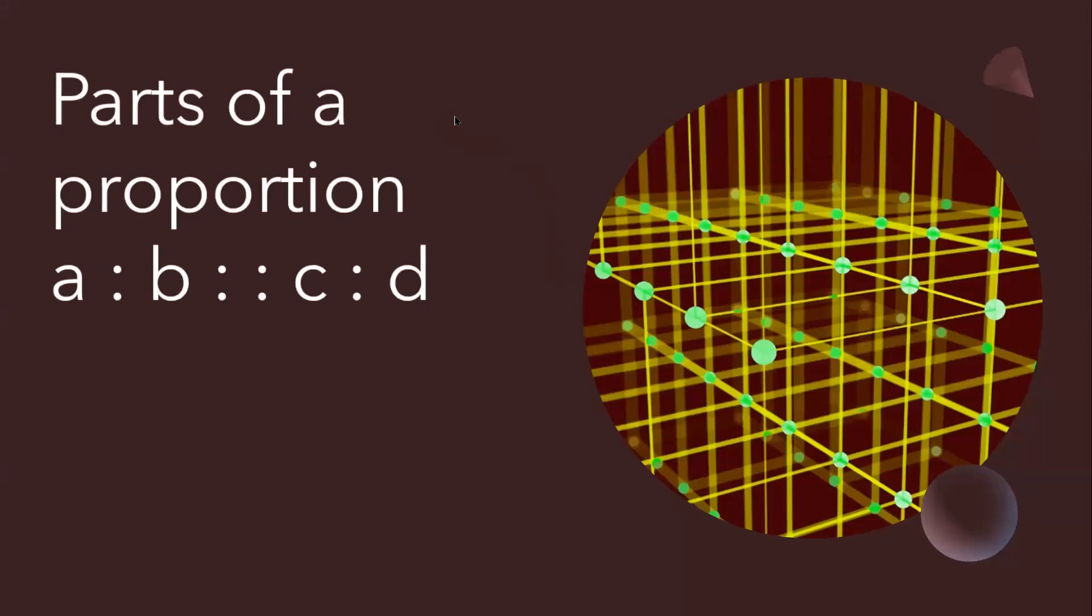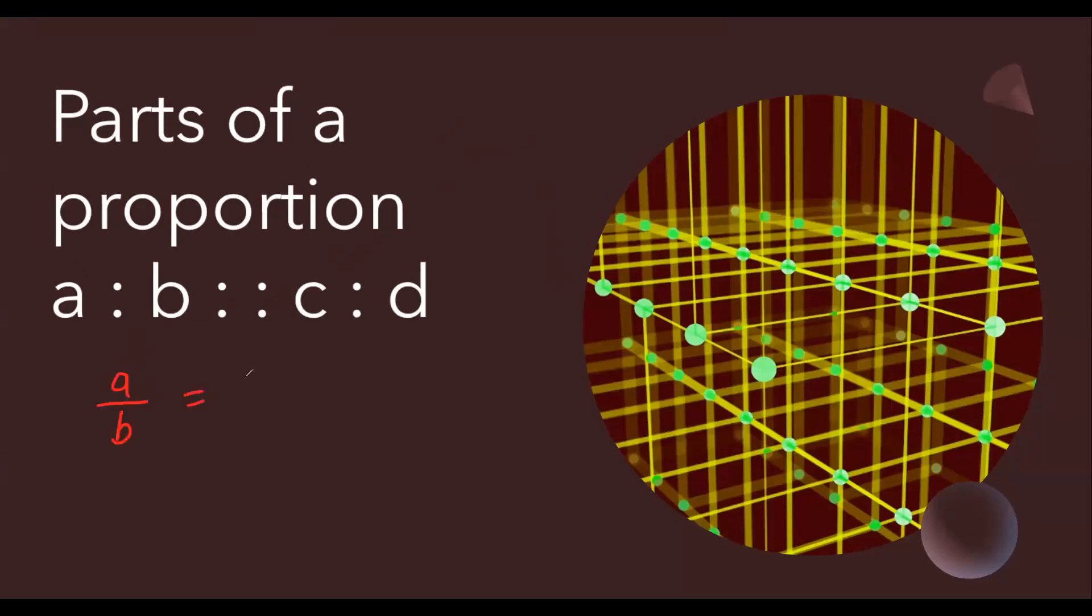Next slide has proportions and parts of a proportion. Proportion basically has four parts. If I show you in fraction form, this is a by b and this is equal to c by d.